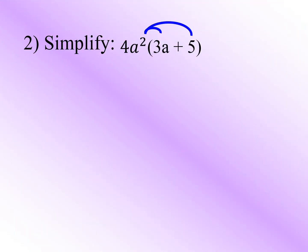Now let's have the second example. We have 4a² times the quantity (3a plus 5). We distribute 4a² to the terms inside the parentheses, which are 3a and 5. So 4 times 3 gives us 12, then copy the variable a and add the exponents: 2 plus 1 gives us 3. So 4a² times 3a gives us 12a³.